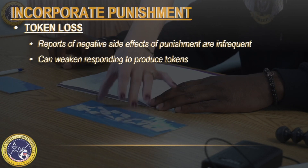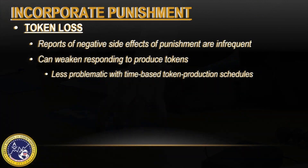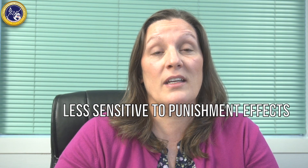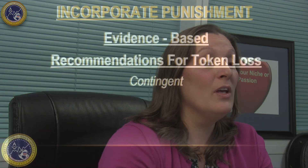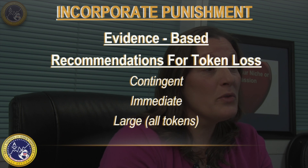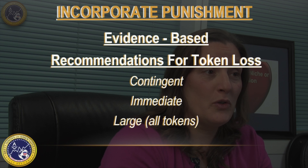One way to address this is to transition to a time-based production schedule, such as a variable interval schedule, as these schedules have been shown to be less sensitive to the punishment effects than ratio-based schedules. For token loss to be most effective, loss of tokens should be contingent on problem behavior, immediate, and the loss of tokens should be large — for example, the individual needs to lose all of those tokens.